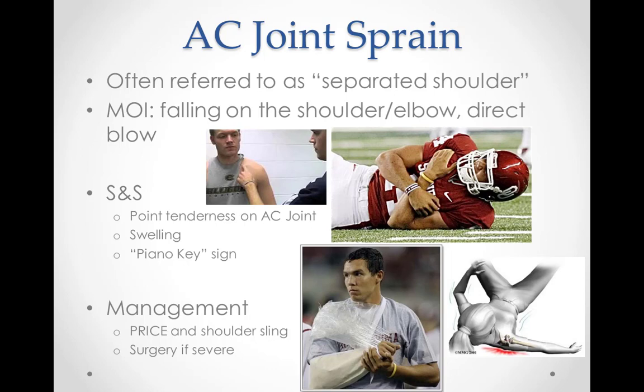Common causes for AC separation injuries include a fall directly on the shoulder, a blow to the shoulder blade, car accidents, and sports injuries most common in contact sports such as football, hockey, and rugby. Signs and symptoms may include pain at the very top of the shoulder while sleeping or making overhead movements, a deformity or bump over the top of the shoulder, shoulder or arm weakness or instability, limited shoulder mobility, bruising and swelling, the shoulder may appear to hang lower than normal, and a popping sound may be heard when moving the joint. Most people recover from AC joint separation in about 2-12 weeks without the need of surgery.